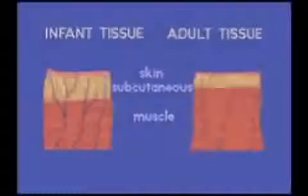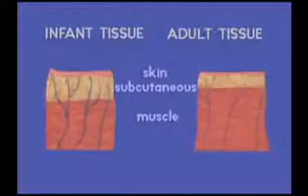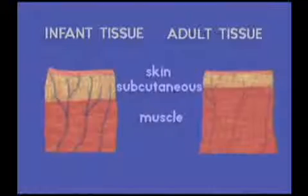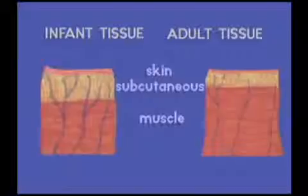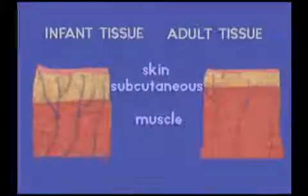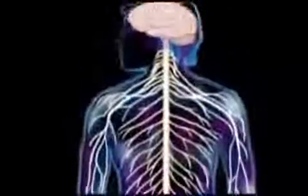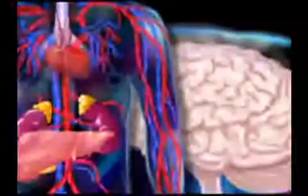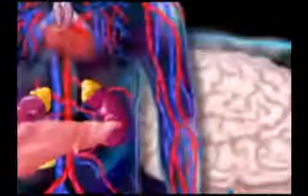As a child grows, body configuration changes, organs become more functional, and the volume of muscle mass to fatty tissue changes. This directly affects the distribution, absorption, and elimination of substances. Development and maturation of the neurologic and endocrine systems is a long and involved process, and drugs have the potential to cause changes that will affect a child's function over a lifetime.